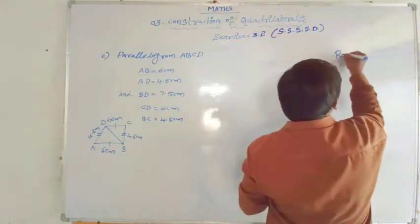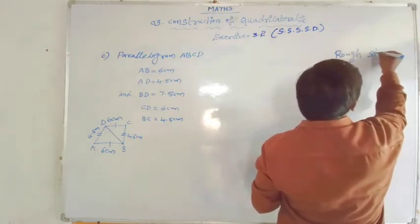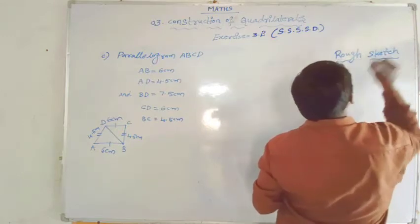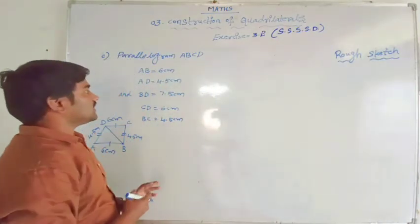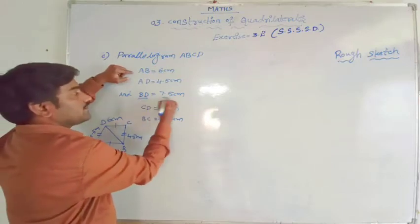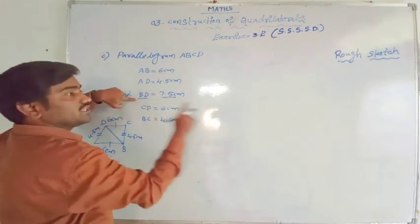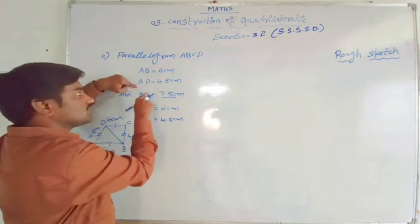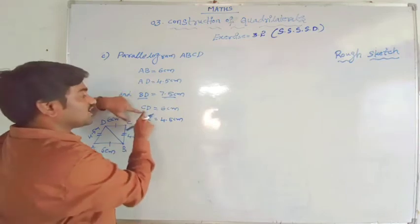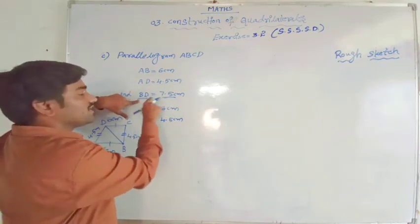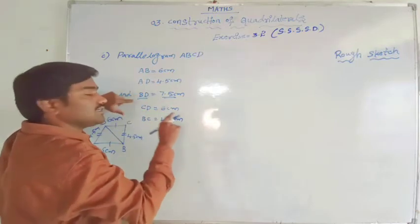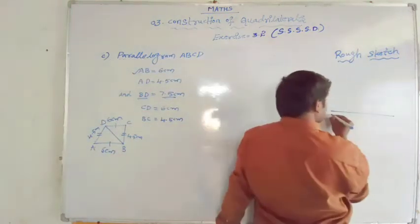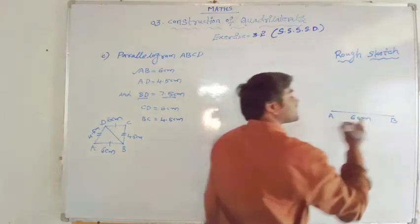So first step is that we have to draw the rough sketch. BD is a diagonal - either B or D should be at the base. Let us take AB as a base, so that B will be on the base. You can also take CD as the base so that D will be on the base. BD is the diagonal, so one of B or D must be on the base. Let us take AB equal to 6 centimetres as a base of this parallelogram.